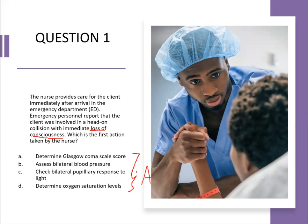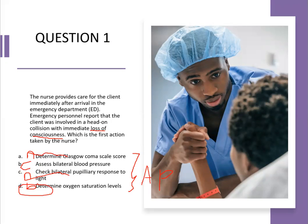It's best to go to step four and look at our answer choices again. The Glasgow Coma Scale is not an ABC — it's more neurological. Answer B is bilateral blood pressure, which is circulatory. Pupillary response to light is also assessment-based. And the last is breathing. So we can eliminate the neurological option and we're left with B and C, which are our correct answer choices.